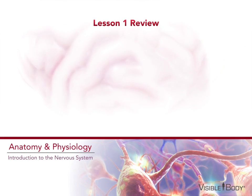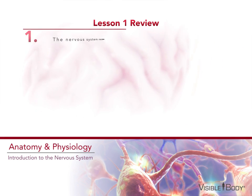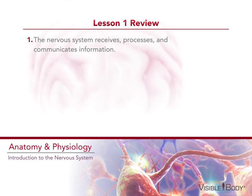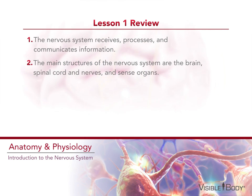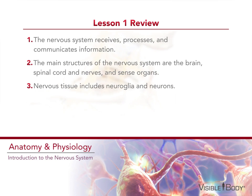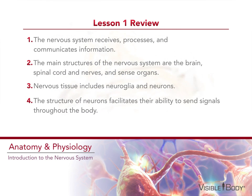Here is a quick review of what we covered in this section. 1. The nervous system receives, processes, and communicates information. 2. The main structures of the nervous system are the brain, spinal cord and nerves, and sense organs. 3. Nervous tissue includes neuroglia and neurons. 4. The structure of neurons facilitates their ability to send signals throughout the body.